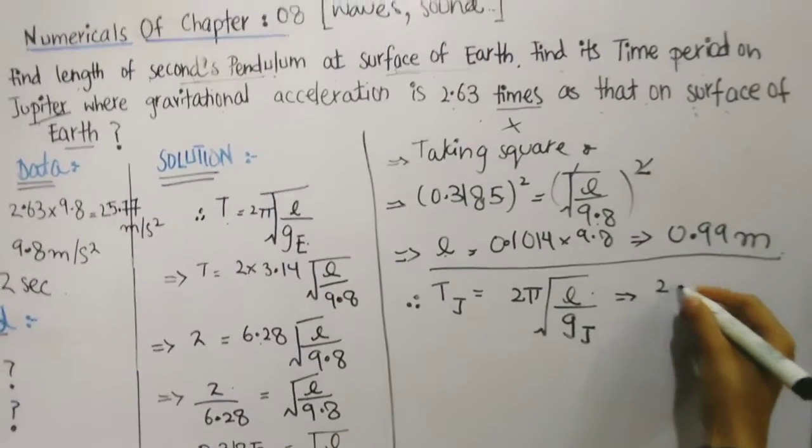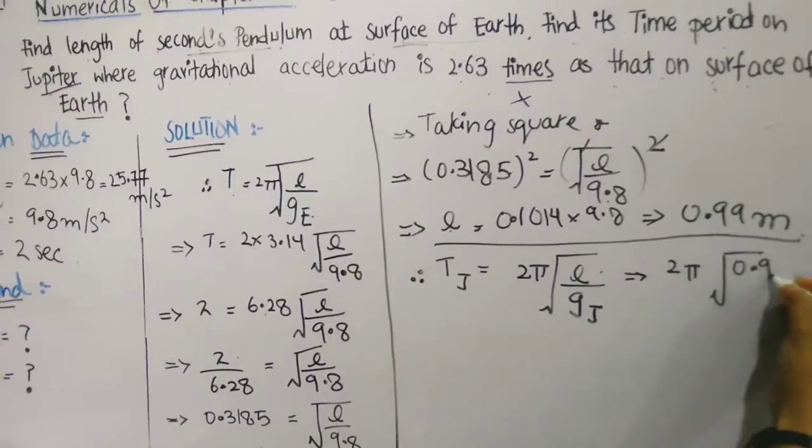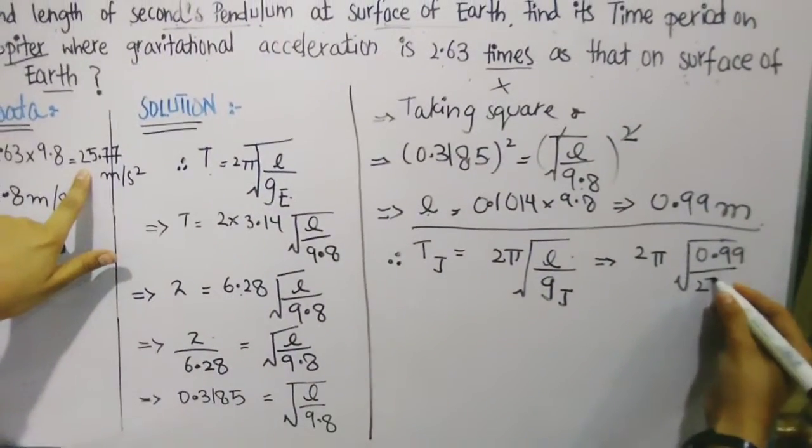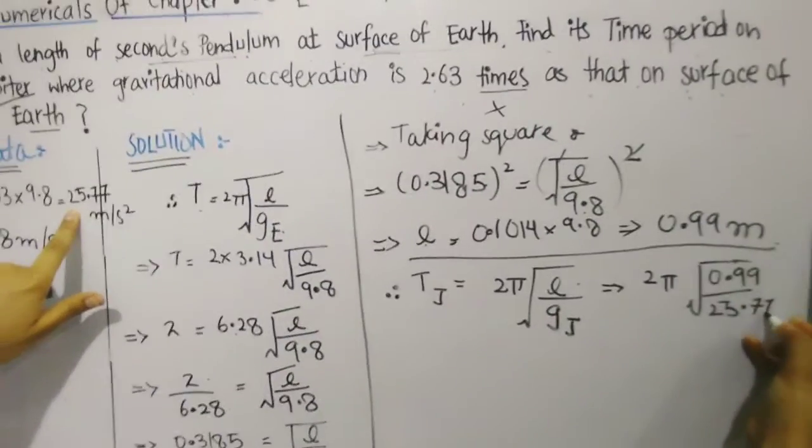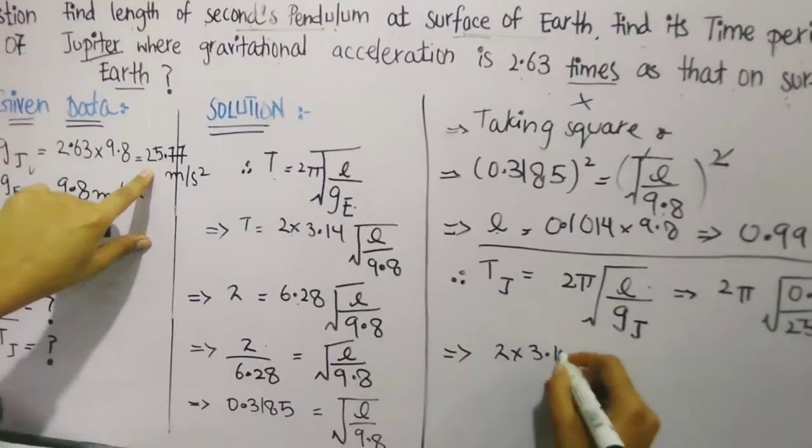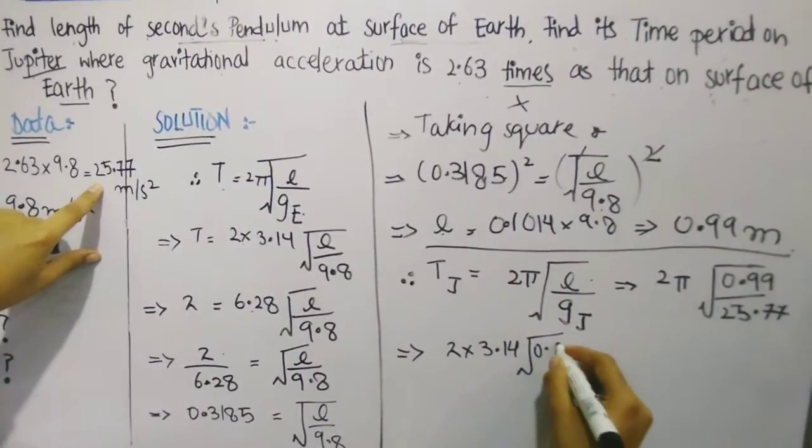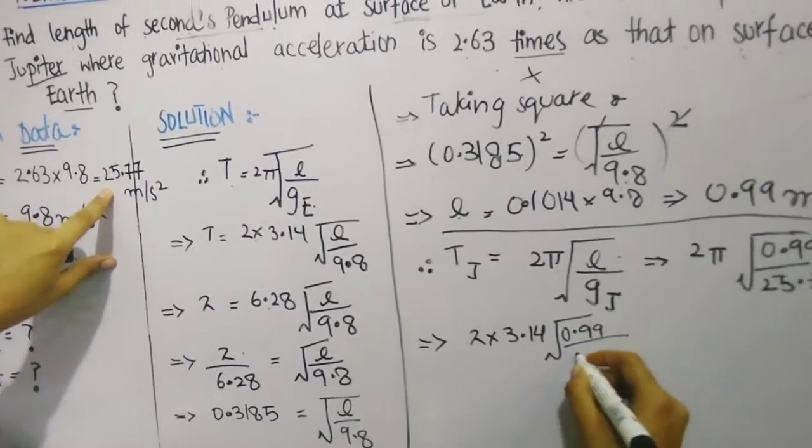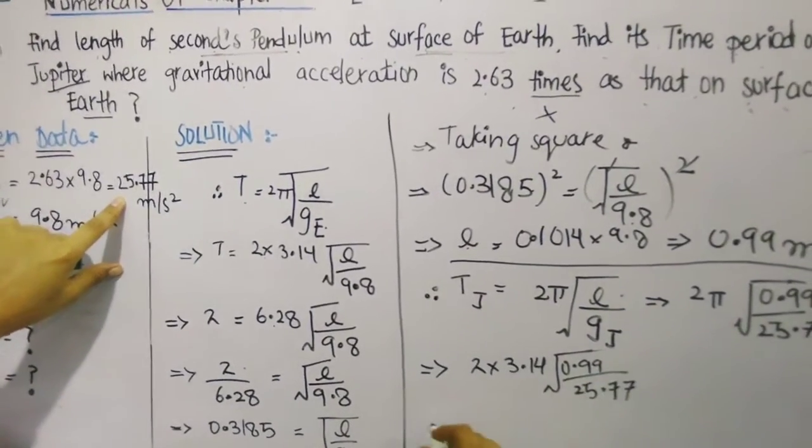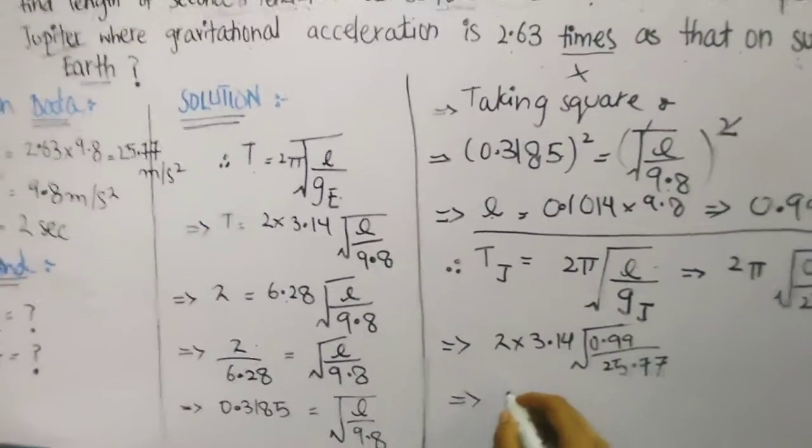Now imagine this: if you go to Mars or Jupiter, then your length and height will not change. If you are 5.6 feet, you will always be 5.6 feet. So this is the case here. Now we put values: 2 multiplied by 3.14 and 0.99. If you give Saturn, Mars, Venus with different gravity, simply we are going to put the values and use the gravity to find the time period.